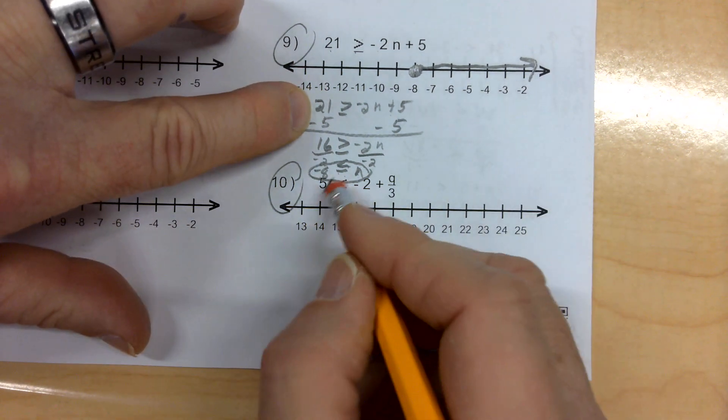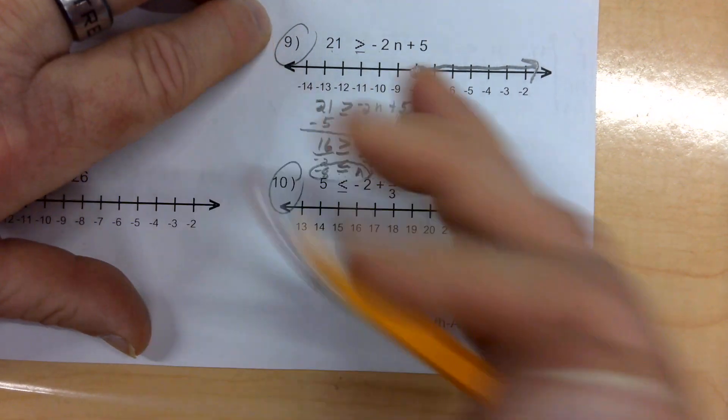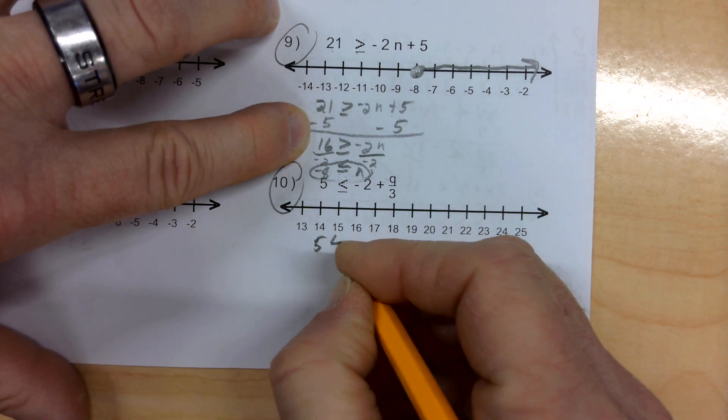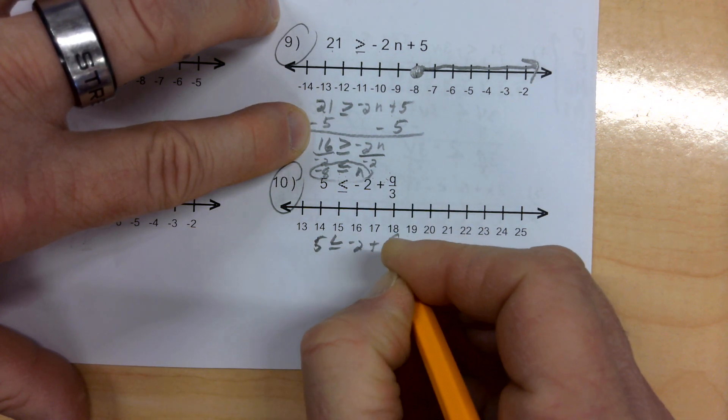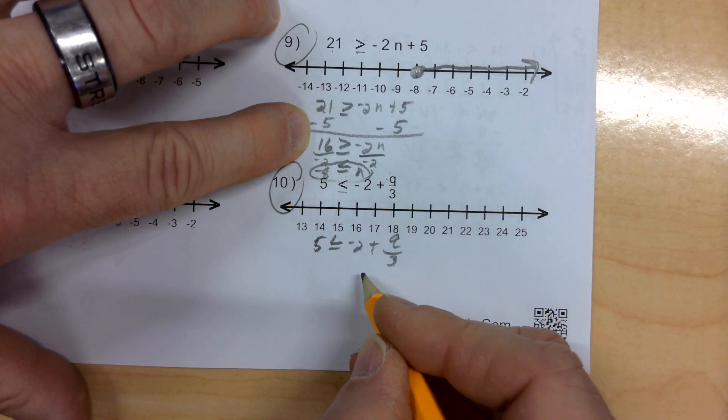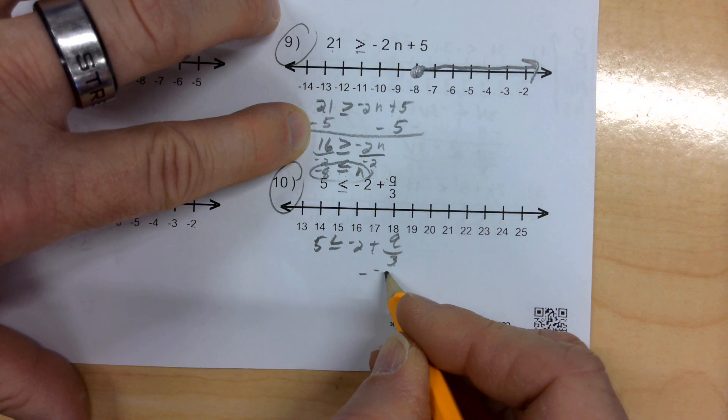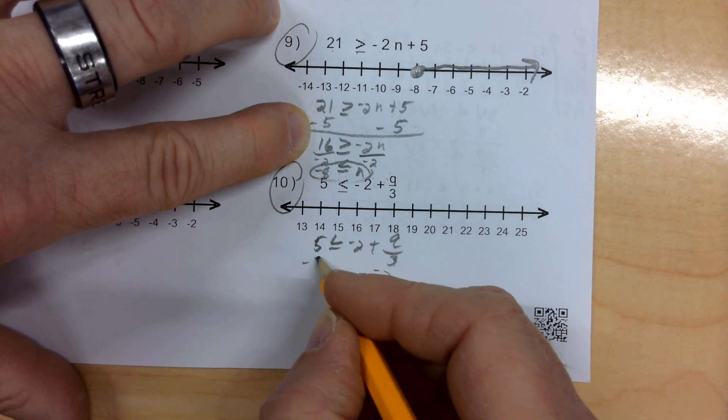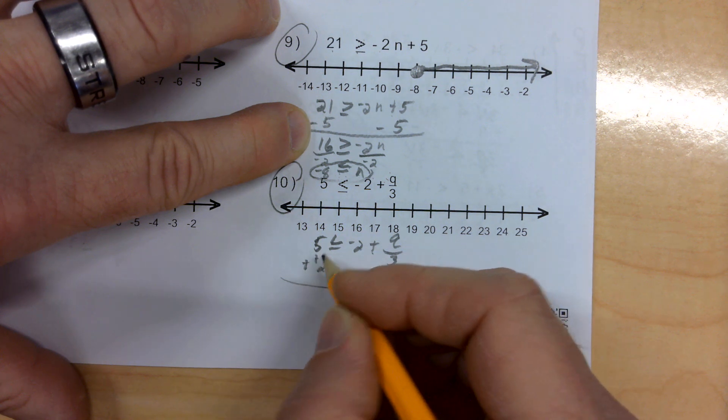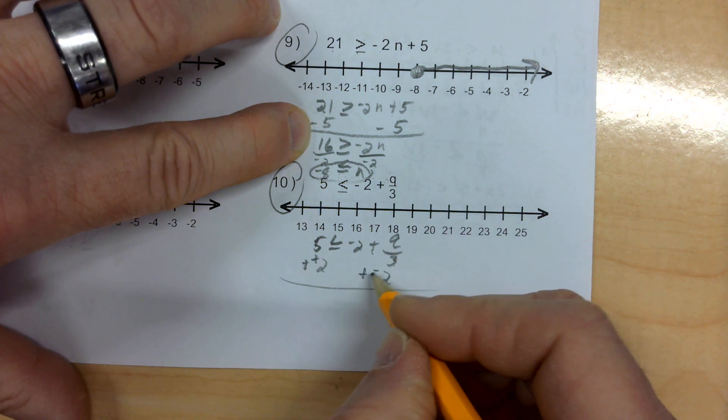Last one. I'm going to erase that circle so we can see it. 5 is less than or equal to negative 2 plus Q divided by 3. This is addition and division. I can undo the addition with subtraction. I'm adding a negative 2, so I want to subtract negative 2 from both sides. I don't know how to do that, so I keep change change.